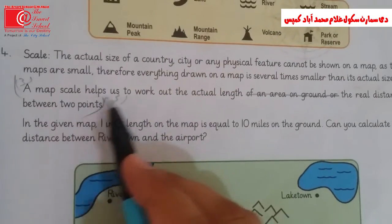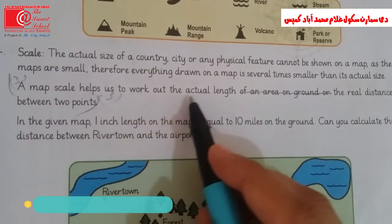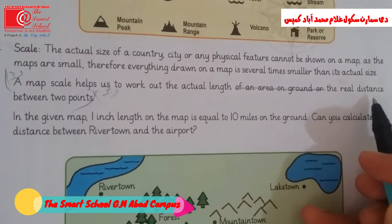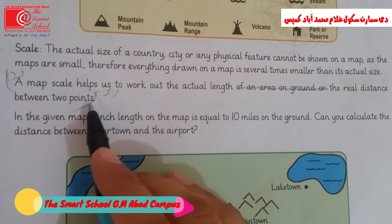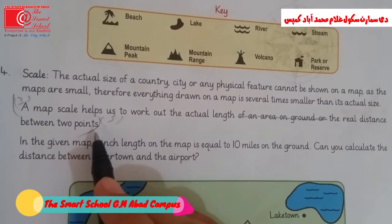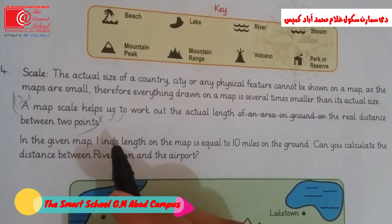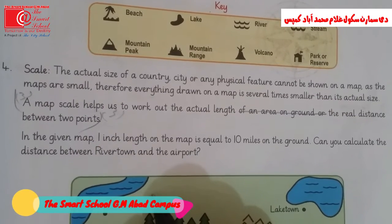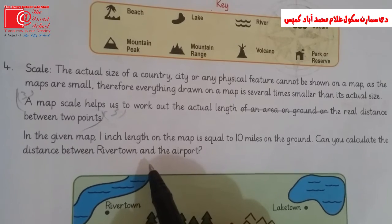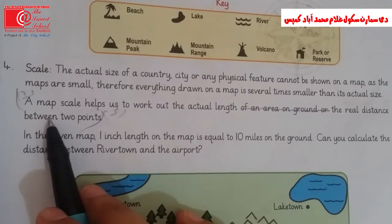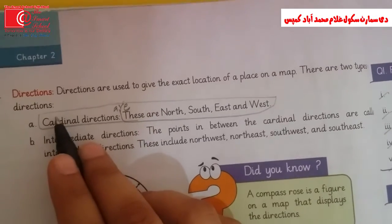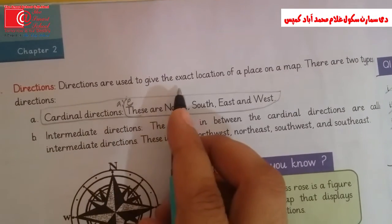The map scale helps us to work out the actual length of an area on the ground and the real distance between two points. The next feature is directions. Directions are used to give the exact location of a place on a map.